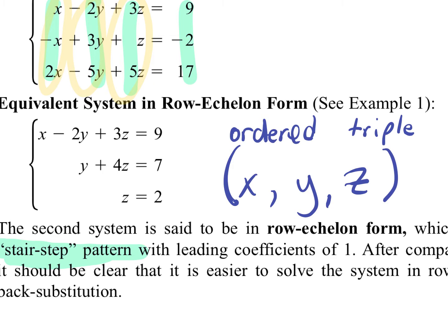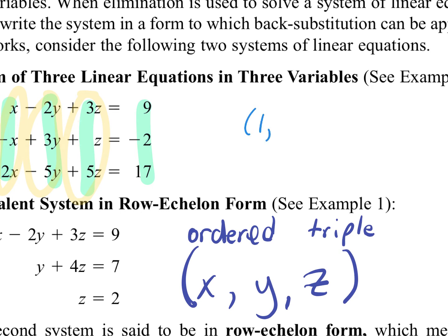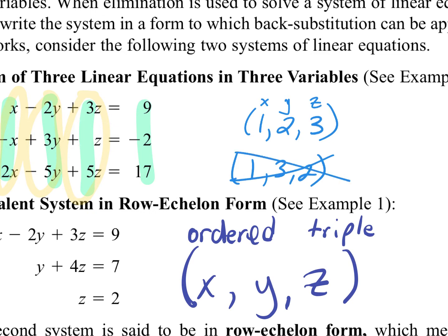It goes in alphabetical order. So if your ordered triple turns out to be one, two, three, that means the x value you found was one, the y value was two, and the z value is three. You can't just randomly put the numbers in whatever order you want. It has to be in the right spot — your x value first, y value second, z value third.